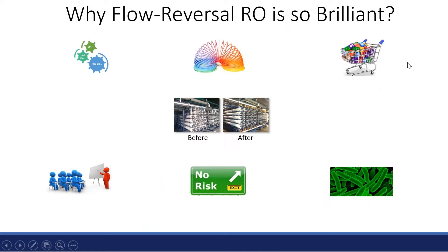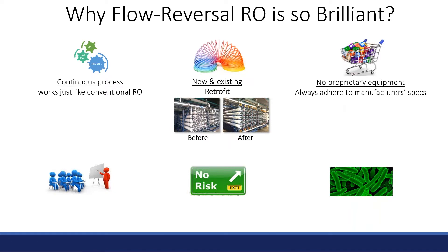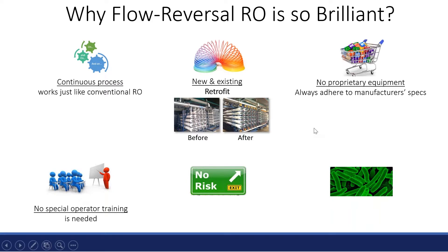Flow reversal is a continuous process that works just like conventional RO. It can be implemented for new RO systems or existing systems by retrofit — a big differentiator for this technology. We do not need proprietary equipment because we always adhere to manufacturer specs. There is no need for special operator training, and there is low risk because we have 100% fallback: at any point, if we don't want high recovery for some reason, we can go back and operate the exact same flow reversal machine as a conventional RO system. Experience in the field also shows the process reduces biofouling and chemical use.